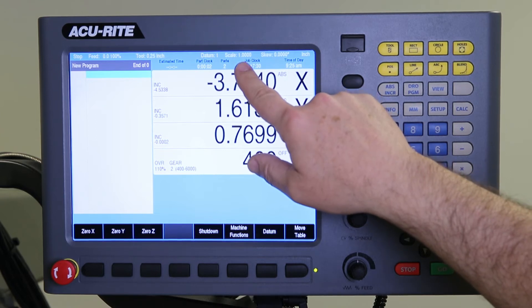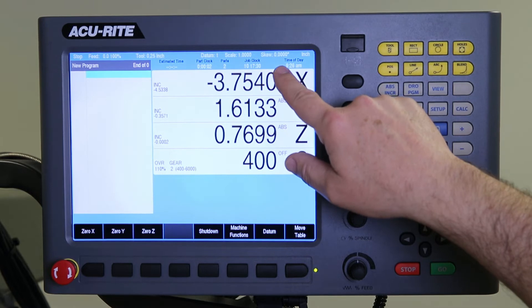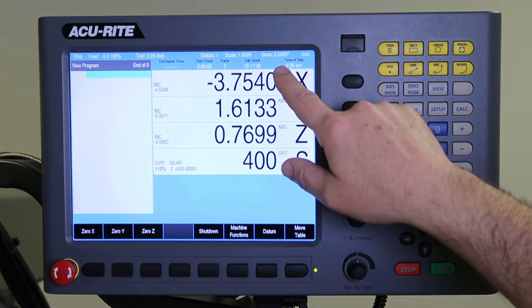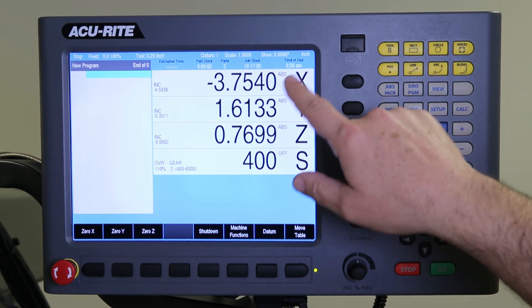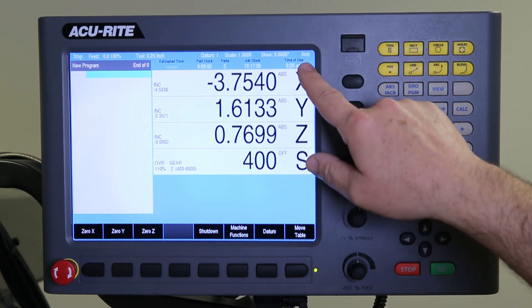The scaling is a multiplier for shrinkage or expansion of material. Skewing is an angle that can be put in to offset the angle of your vice or fixture and then whether you're programmed in inch or metric.